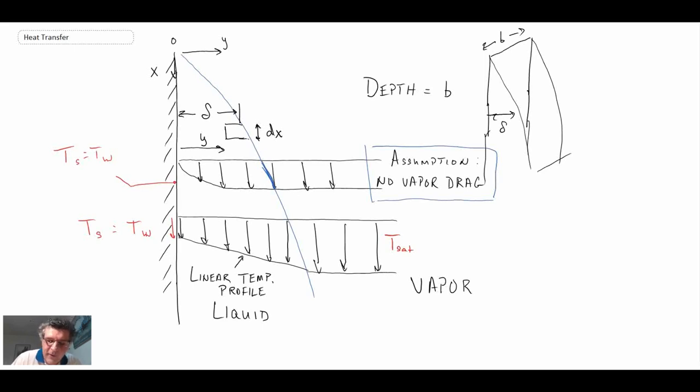Another assumption that he made was that the temperature profile was linear with position, and so that was another approximation that enabled him to simplify this scenario of what was going on.